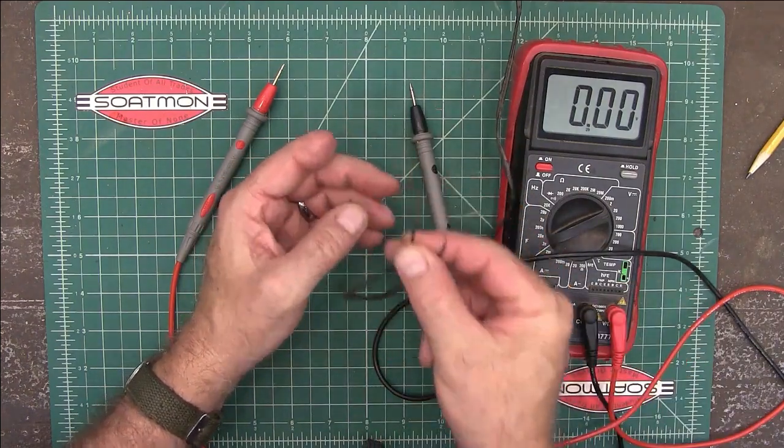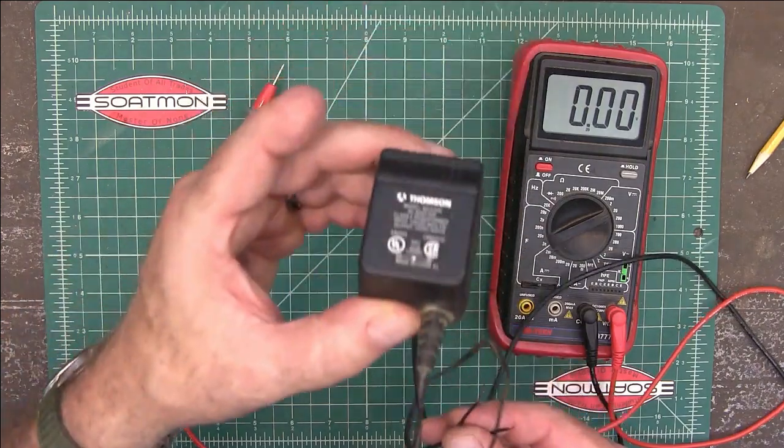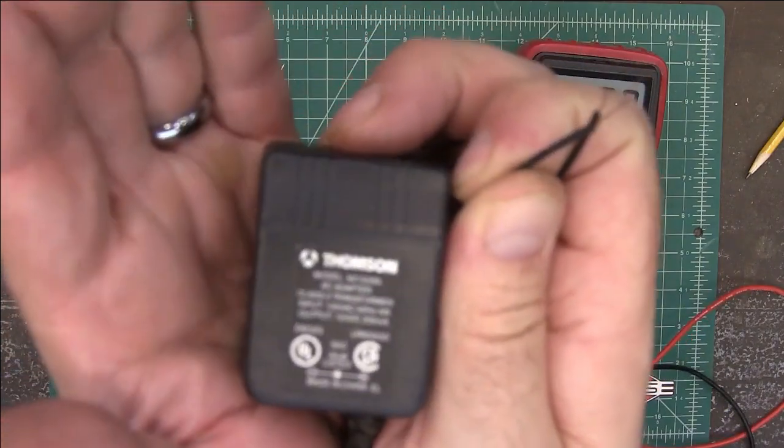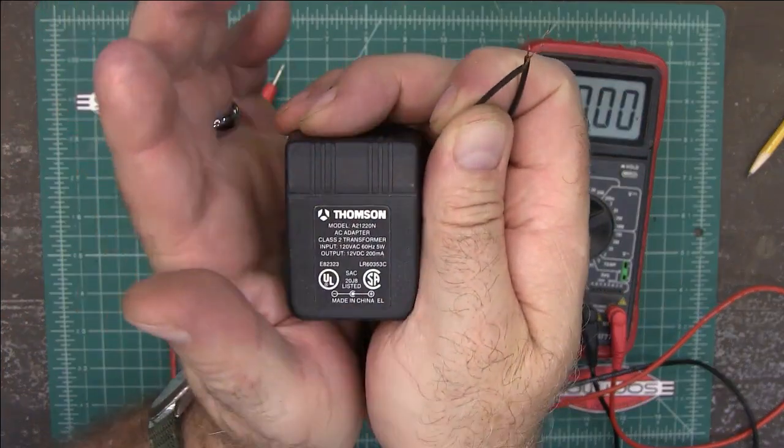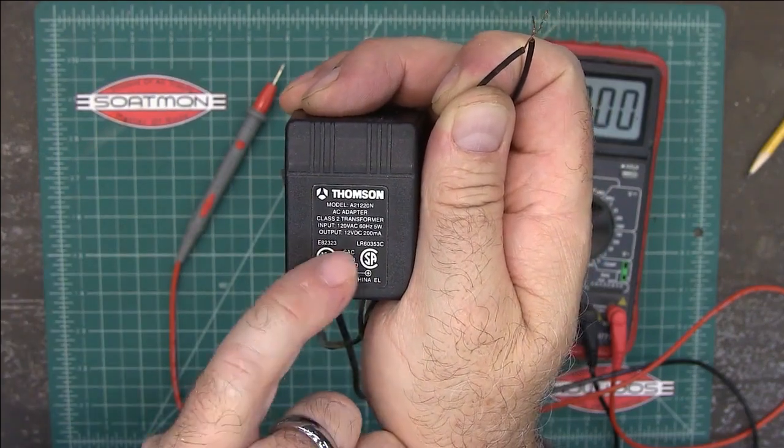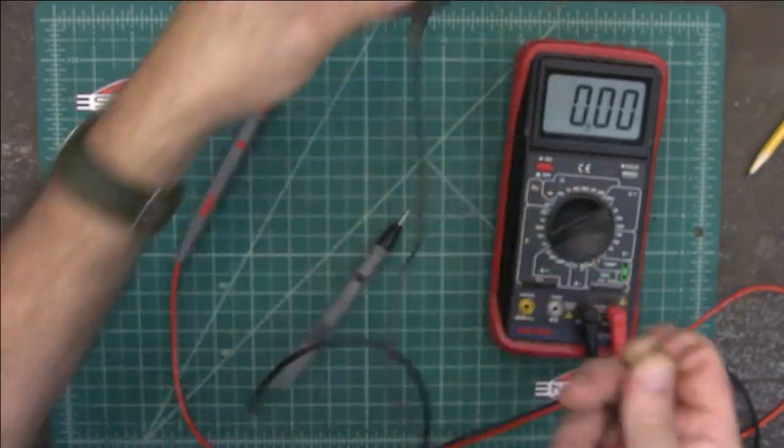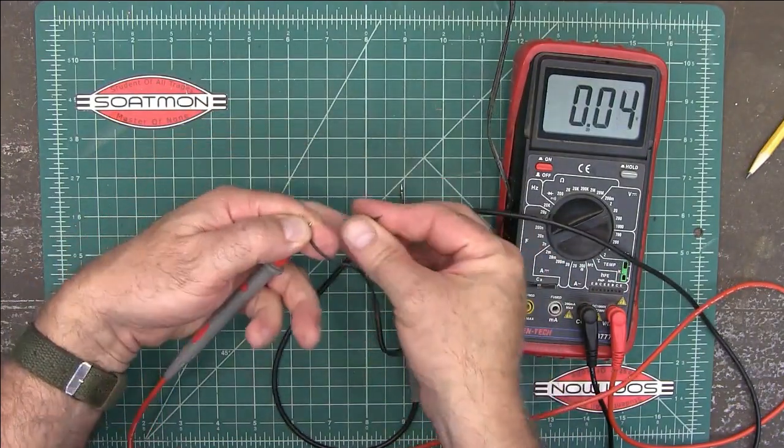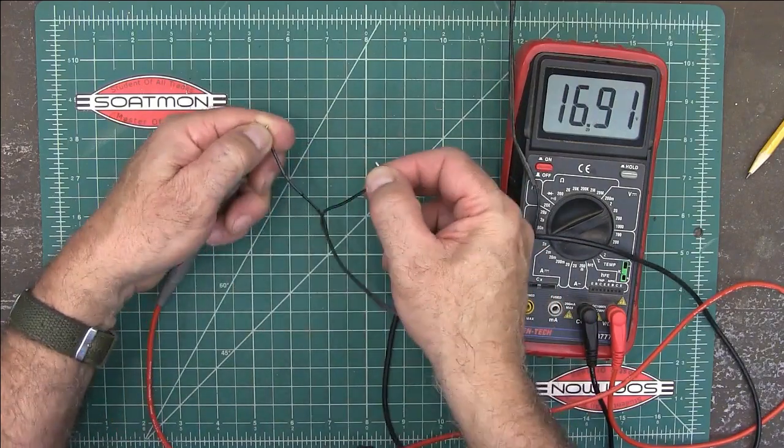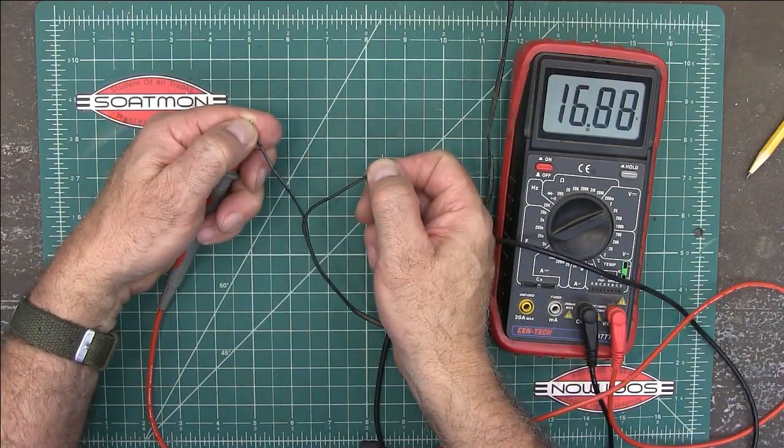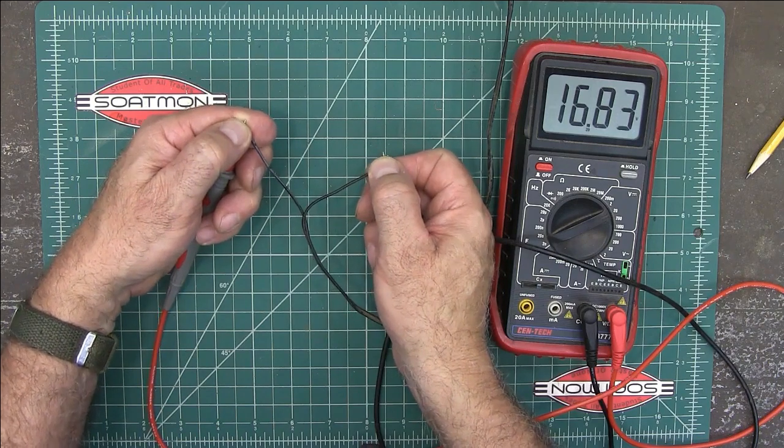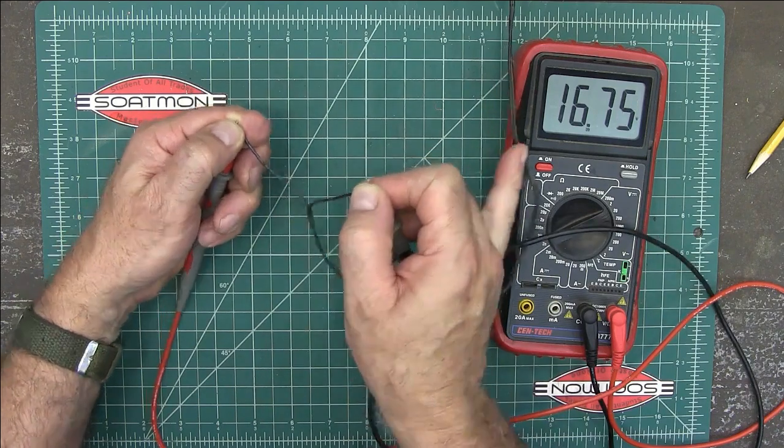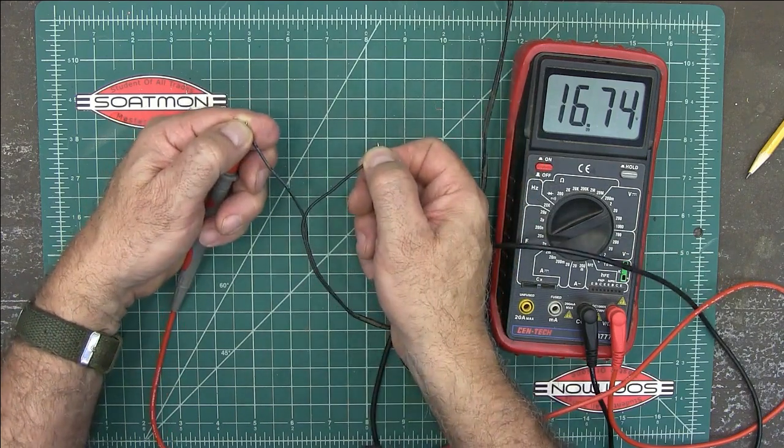Now you may be asking, this is a 12 volt transformer right here. It says 12 volts right there on it. But when I test it, it reads 16 volts. You're going to find that's a common thing that these put out more voltage than what they actually say. I've always found that if I have a 12 volt transformer and I hook it up to something that needs 12 volts, even though it may read 16, it'll still work just fine. It's not going to cause a problem.